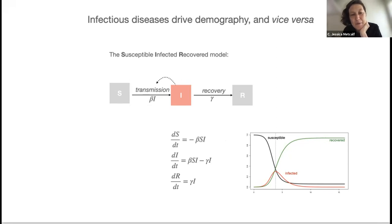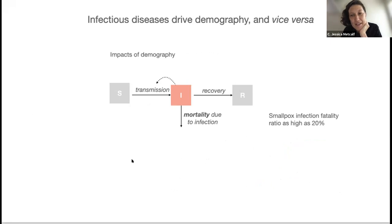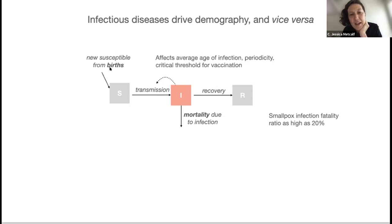These flows are not demographic, yet demography really matters when thinking about infectious diseases. In particular, infectious diseases kill people. Smallpox, for example, is estimated to kill as many as 20% of the individuals who are infected. But there's a more subtle way in which demography affects infectious disease biology. This model I showed was closed. In actual fact, we believe that susceptible individuals will be replenished by births, either directly or following an interlude of maternal immunity. New individuals who are born into this population are susceptible.